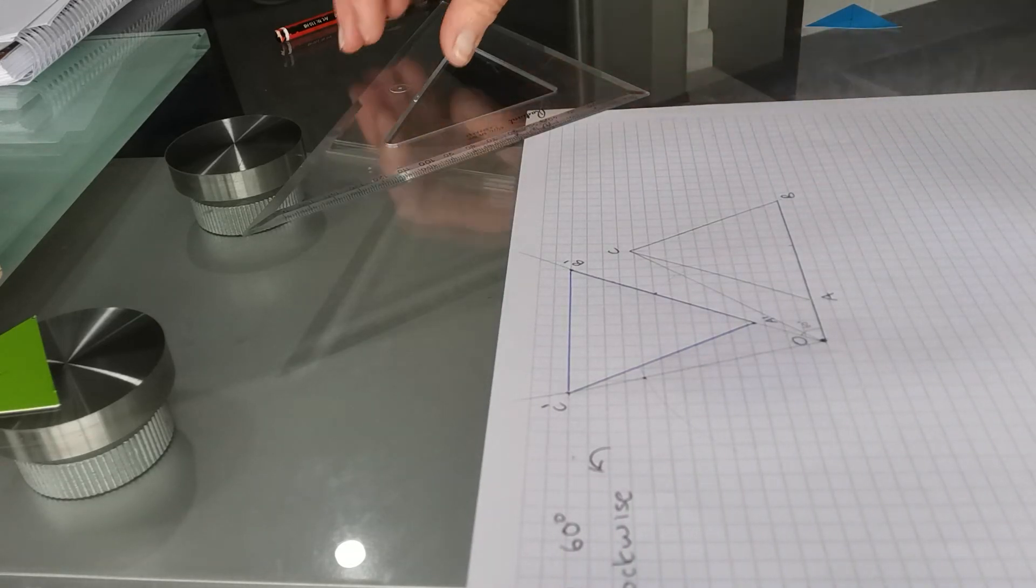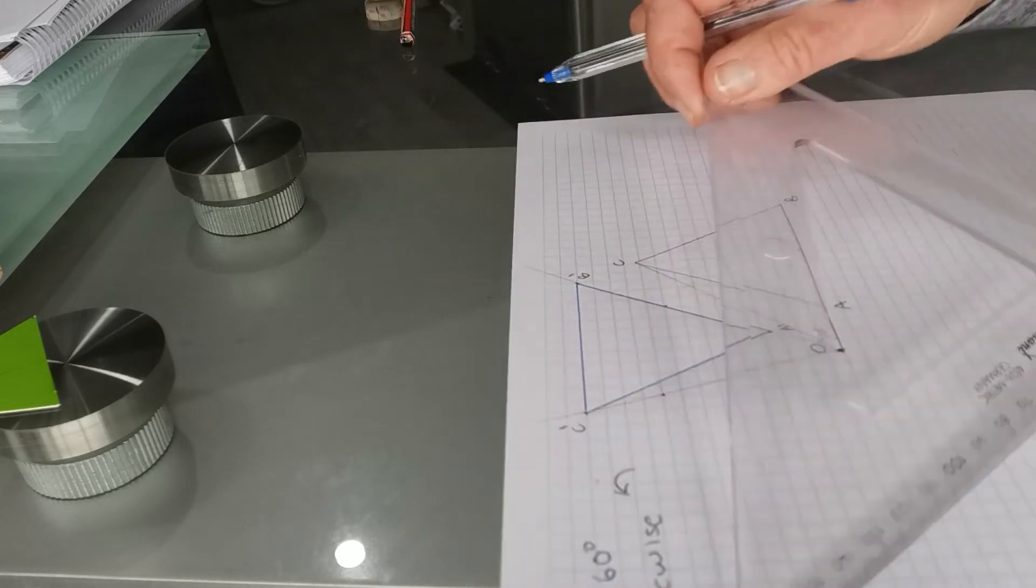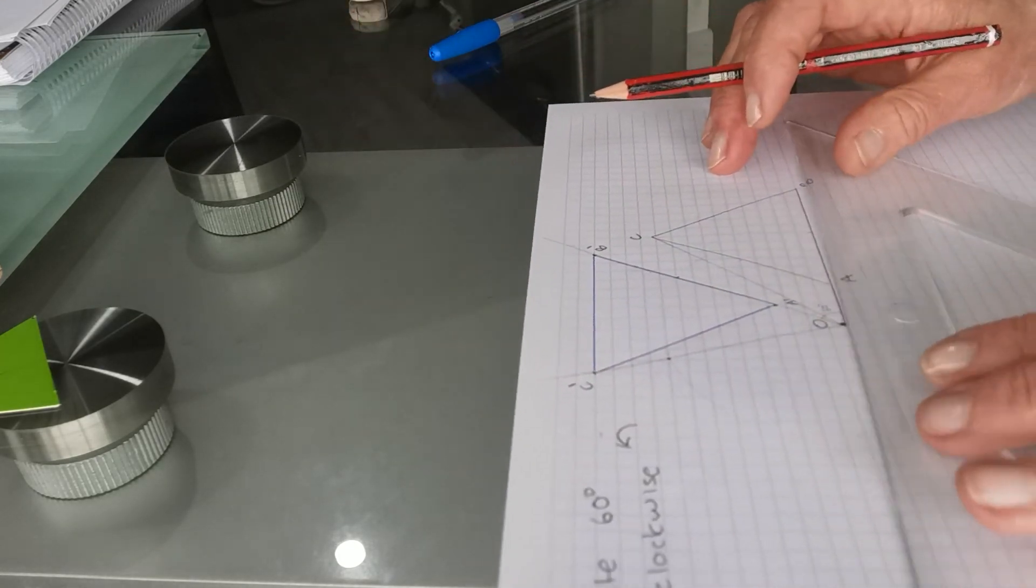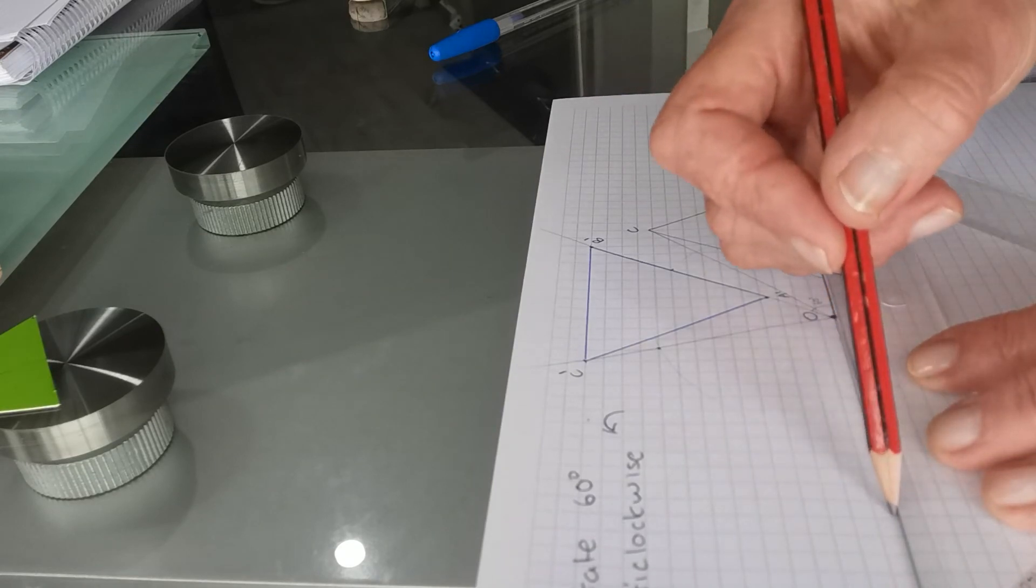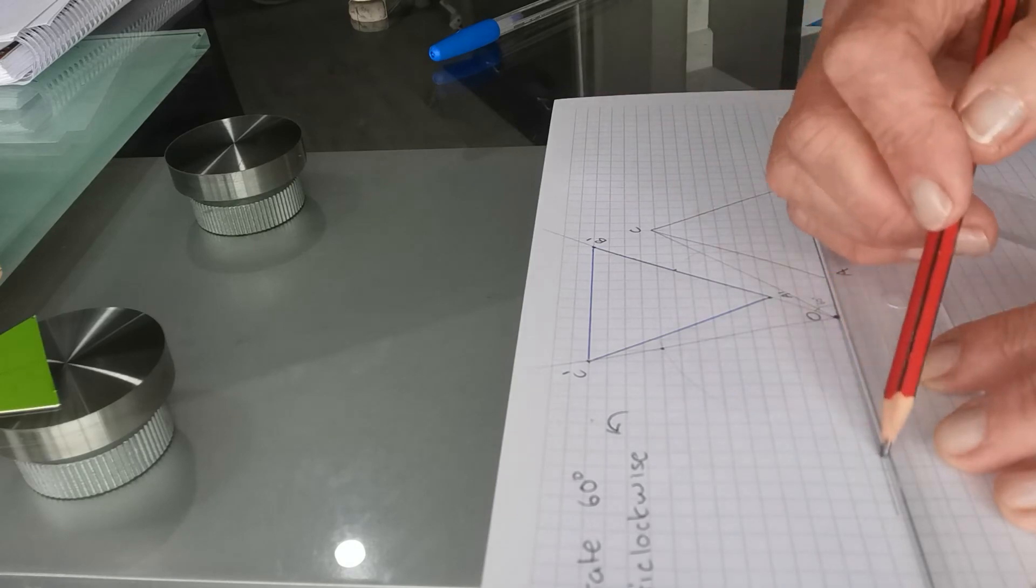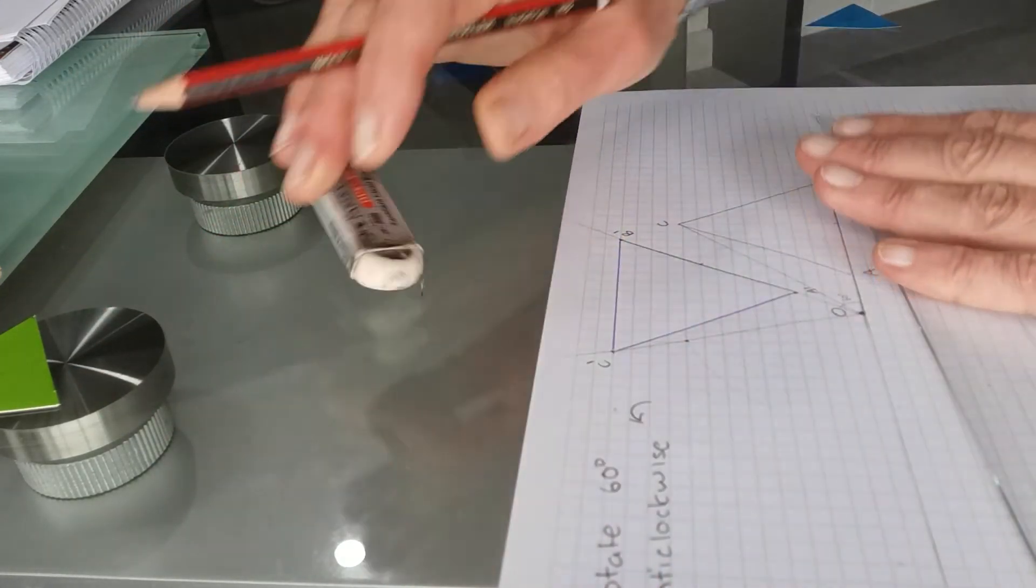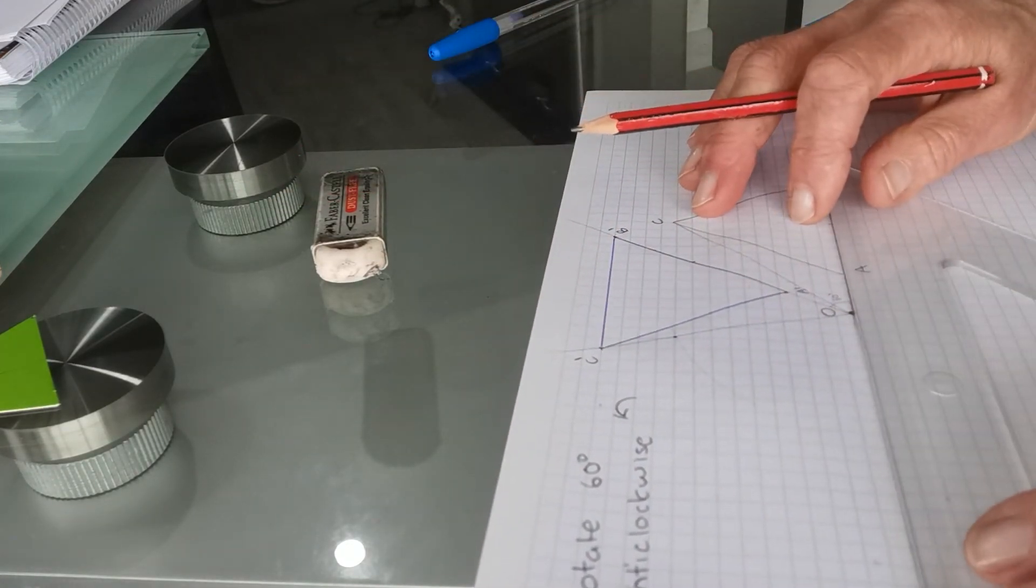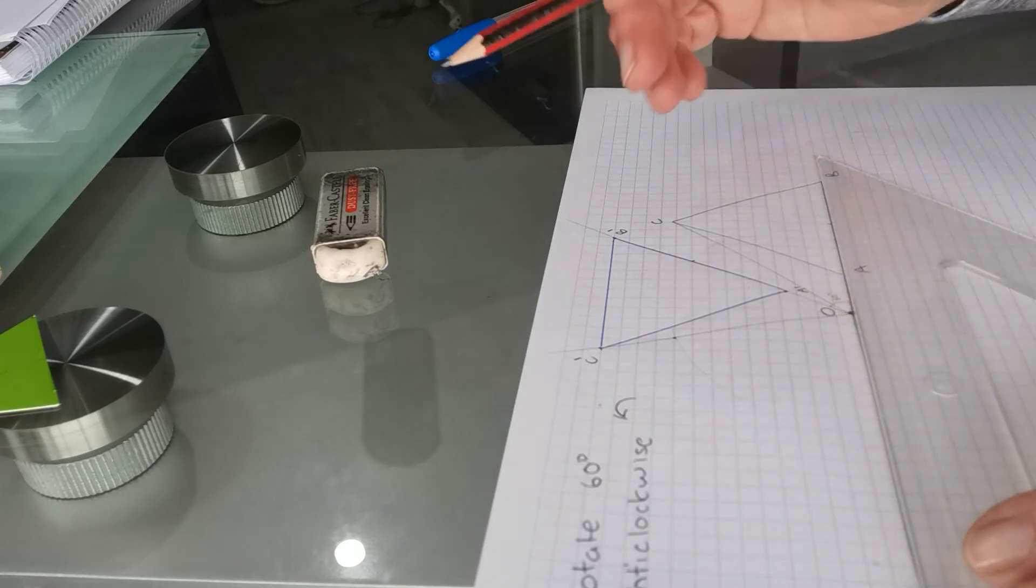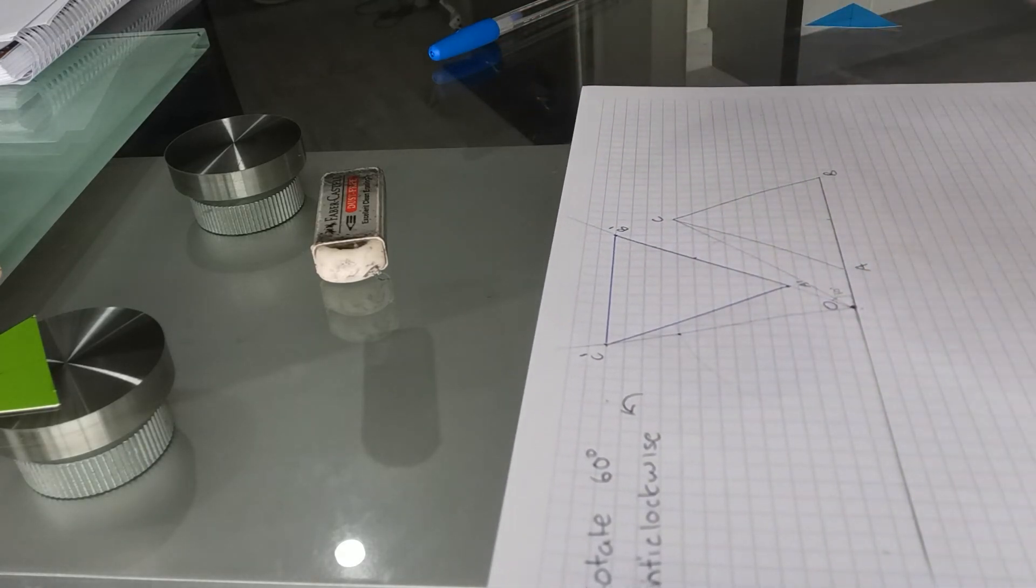180 degrees is quite easy because all you have to do is project the line from A and B straight across on the grid lines.